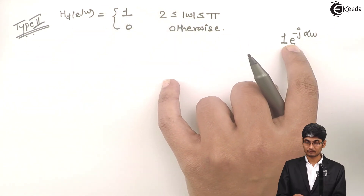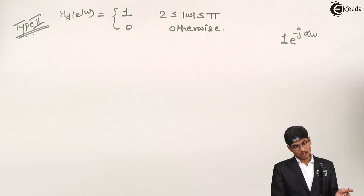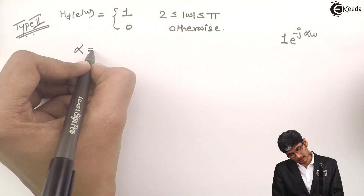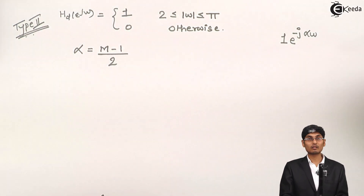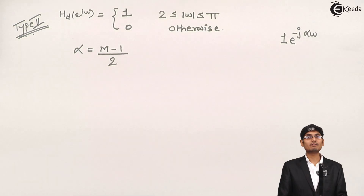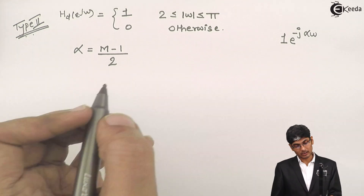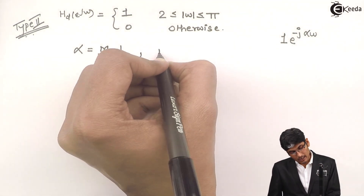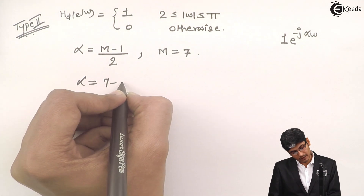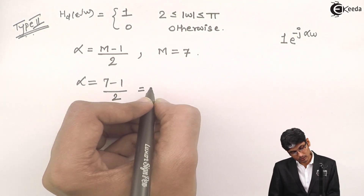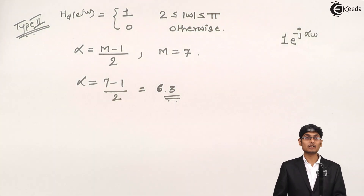So, how to find alpha? To find alpha, we need M, because alpha is given as (M−1)/2. This is the formula: α = (M−1)/2. M should be specified in the problem. Here, in the current problem, M is specified as 7. So my alpha will be (7−1)/2 = 6/2 = 3.